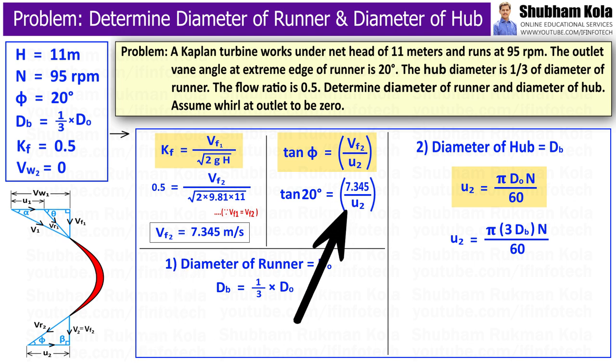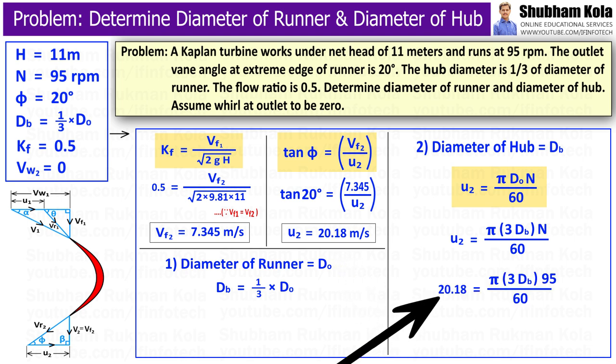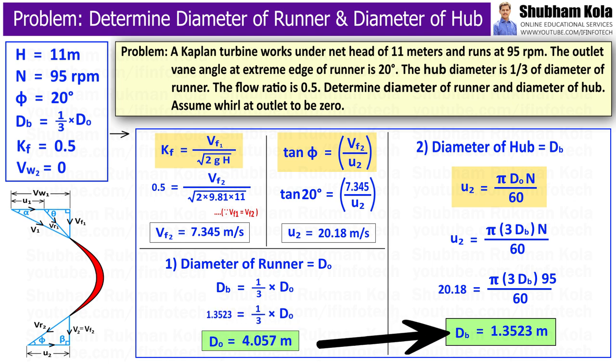So now from the value of Vf2, we will calculate u₂ as 20.18 meter per second. Now we will substitute, where we will get the value of hub diameter Dh equal to 1.3523 meter. And diameter of runner, that is outer diameter D₀, we will calculate as 4.057 meter.